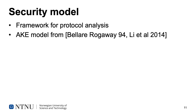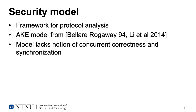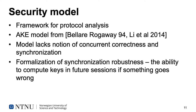We give a description of the AKE model in which we prove our protocols secure. This model follows the standard approach for AKE models based on the Bellare-Rogaway model and is very similar to the one presented by Lee et al. in 2014. The AKE model doesn't have any notion of concurrent correctness or synchronization robustness. In traditional public key AKE protocols, we don't have the synchronization problem, so the model doesn't need to handle this. However, for the symmetric key case with evolving keys, we need some way of analyzing this property. The formalization of this property is our most important contribution to the security model, and our framework for analyzing protocols is unique in that it models availability as a security feature.